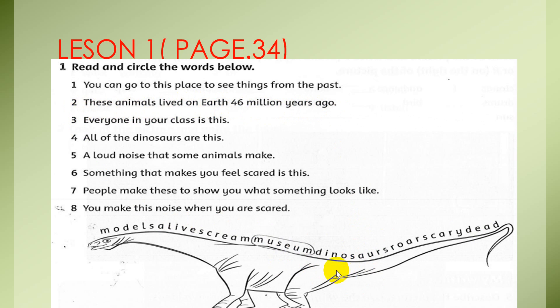Number 3, everyone in your class is this. Alive. And number 4, all of the dinosaurs are this. Dead. How about number 5? A loud noise that some animals make. Roar.